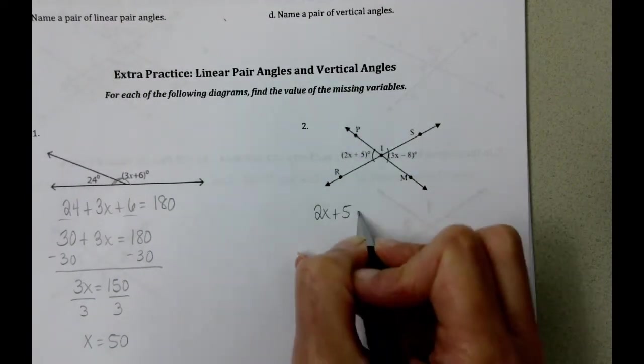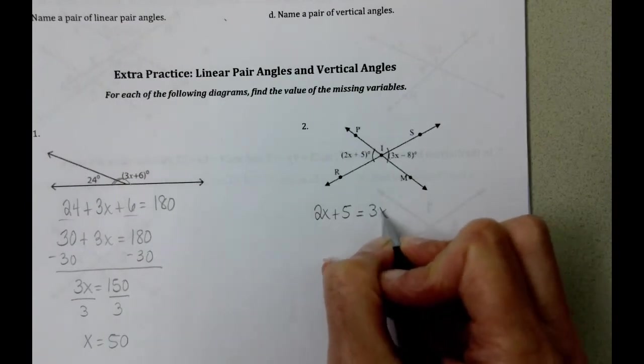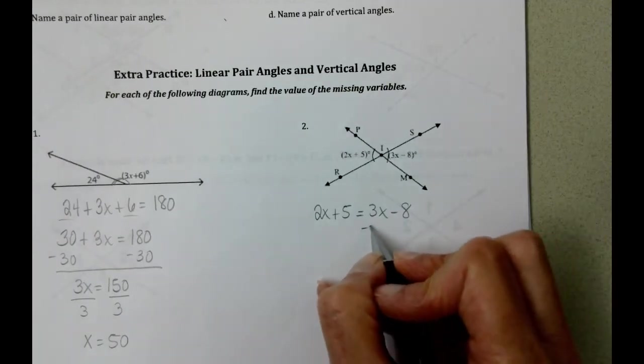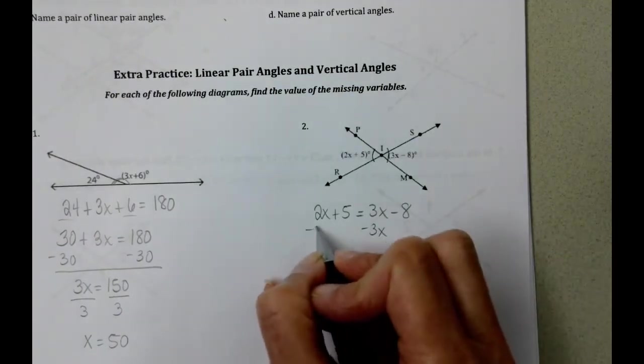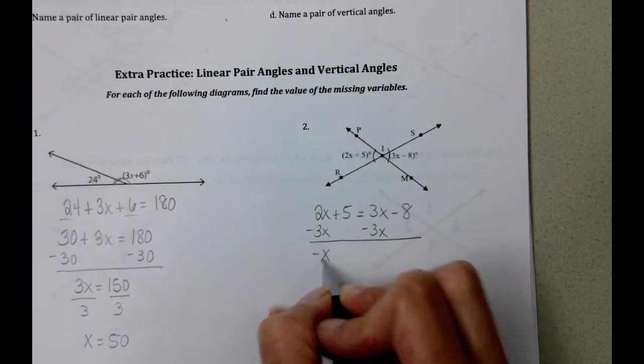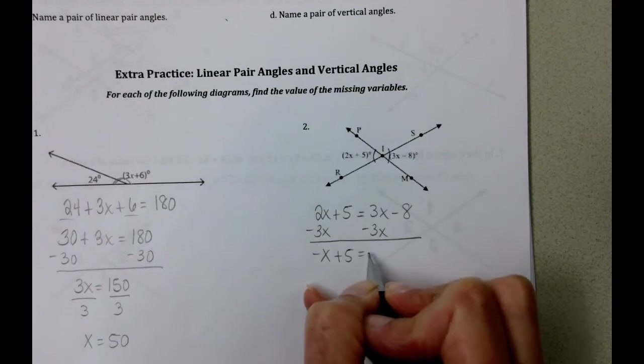But opposite angles, we could set equal to each other and solve it the way your Algebra 1 teacher taught you. I'm going to move my letter to the left. So I'm going to subtract 3x from both sides. We get negative x plus 5 equals negative 8.